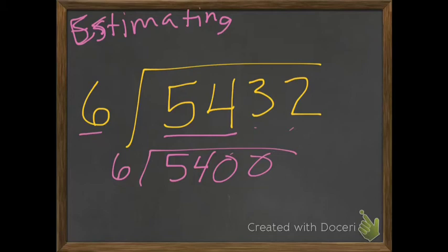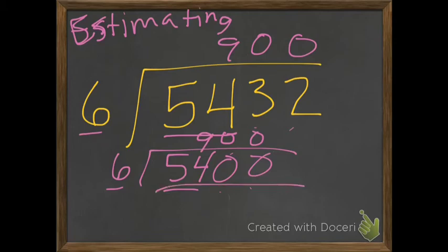There's no zeros in the divisor, so that's just a 6. So I go 54 divided by 6, which is 9, and add my two zeros that are left over. So my answer here should be about 900.